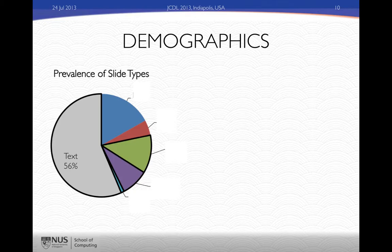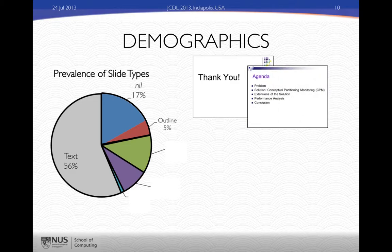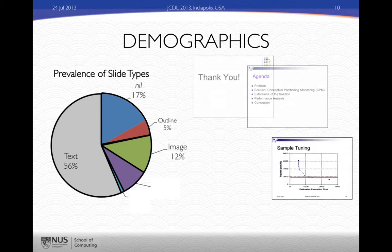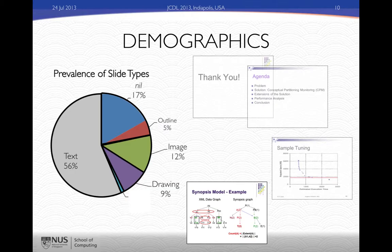Looking at this 20 slide-pair dataset, we find that the majority of slides are composed of text. But there are a substantial number of slides that aren't fully text. For example, slides like ending thank-you or agenda consist of slides that shouldn't be aligned, or nils, as well as outline slides. Image slides — ones that are mostly images without much text — comprise about 12% of slides in this dataset. Drawing slides containing many graphical elements and small text boxes comprise 9%, and very few slides contain tabular information.